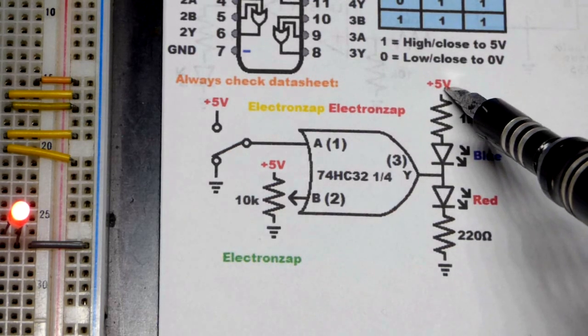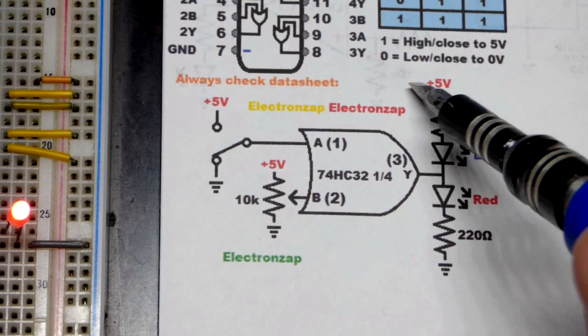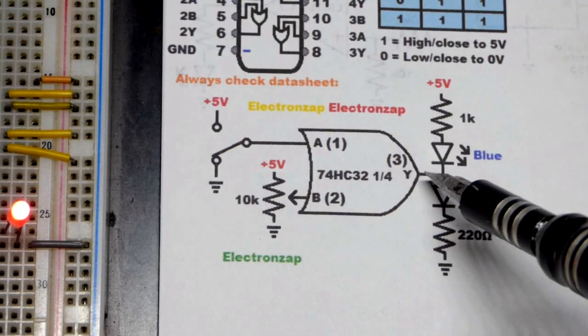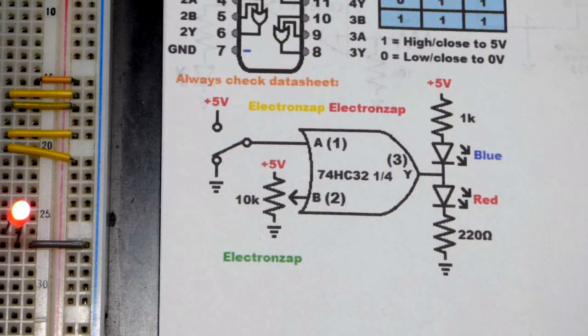So it actually probably did not provide five volts. I haven't measured it. But usually these integrated circuits lose about one volt, probably about four volts. But it was still enough to power the red LED.